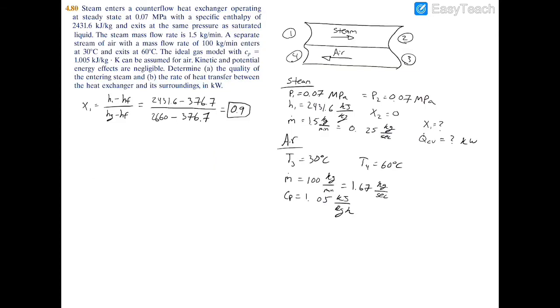Next, to find the heat transfer, we can apply the energy balance over a control volume. So Qcv minus Wcv plus the sum of the inlets minus the sum of the outlets. So all this is is heat transfer minus work plus sum of mass flow rate times enthalpy at inlets minus sum of mass flow rate times enthalpy at outlets is equal to zero.